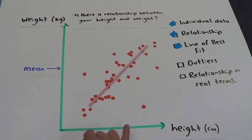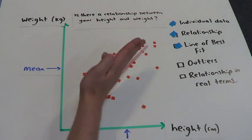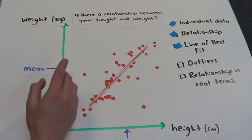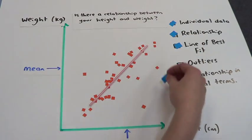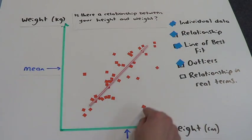But if I look out over here, this is an incredibly tall person who is incredibly light. This is a really skinny tall beanpole. This person is a long way away from the line, so he is an outlier.